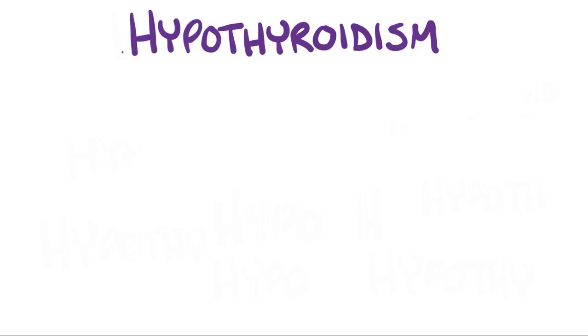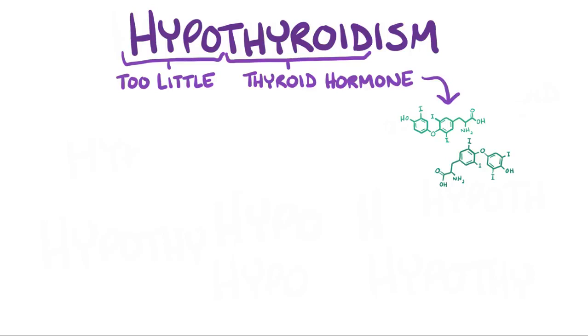In hypothyroidism, hypo refers to having too little, and thyroid refers to thyroid hormone, so hypothyroidism refers to a condition where there's a lack of thyroid hormones.